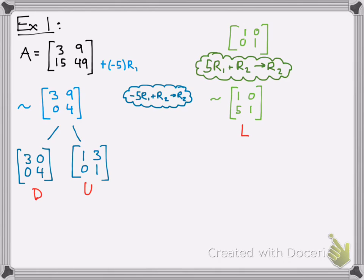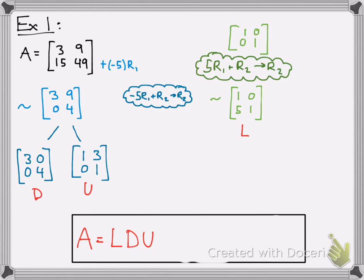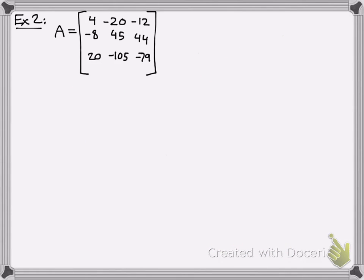Then you have your lower triangular matrix. Now, what's the formula? A equals LDU. And you just plug in what you got. You just put all the pieces together. L, D, U. Cool. So that's LDU factorization, and let's do another example.